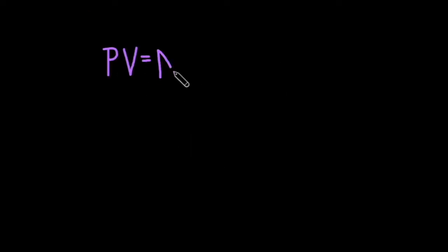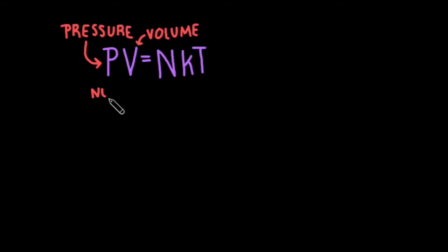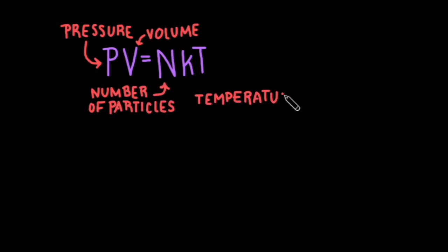If you have taken any sort of physics course, you are probably already familiar with the ideal gas law: PV equals NKT. P stands for pressure, V for volume, N for the number of particles, T for temperature, and K is just a constant.